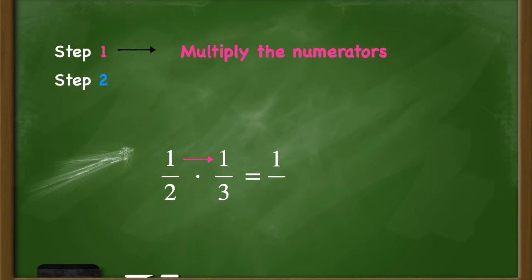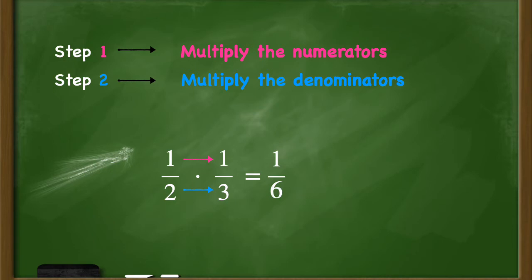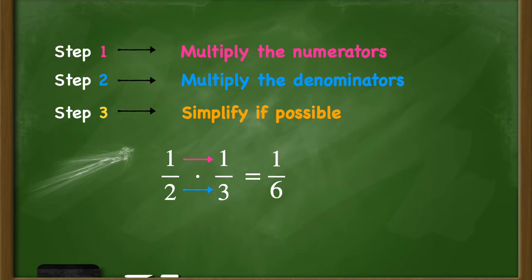Step two is just as easy as step one — you're going to multiply the denominators. My denominators are two and three, so two times three gives me six. My last step is to make sure that my answer is in simplest form, meaning my numerator and denominator do not share any common factors other than one. When I look at one-sixth, I can see that one and six do not share any common factors other than one. So my final answer will be one-sixth, and that is all there is to it. You just follow those three simple steps every single time and you will get the answers correct.